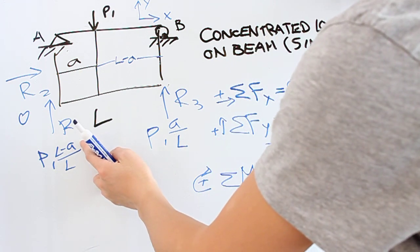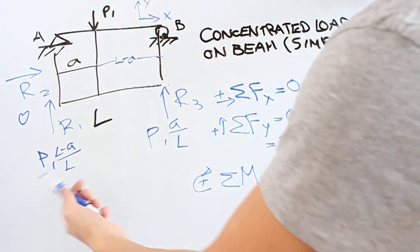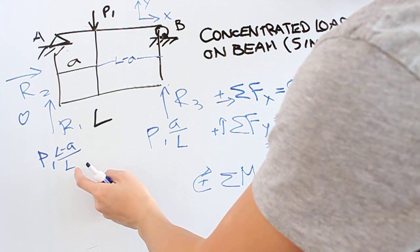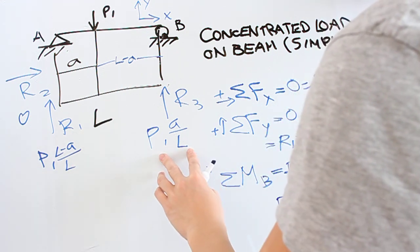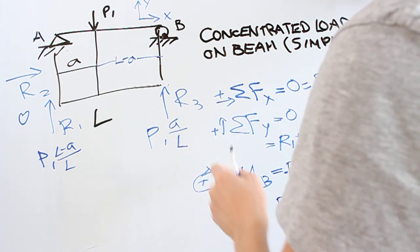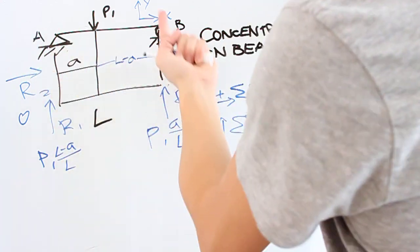So notice that depending on a, you're going to change your values here. If a is L over 2, so if this force is right at the center, what would these forces be? You'd have L minus L over 2, which is L over 2 over L, so you have one half. And then here you have L over 2 over L, which is again one half. So P is distributed evenly on each side. Each side gets P over 2 force outwards.